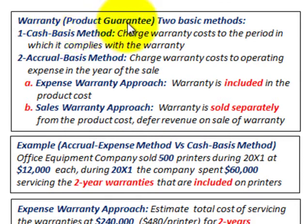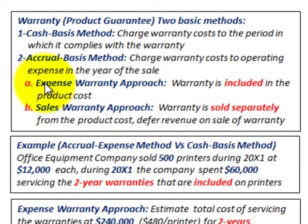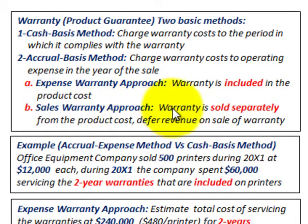We're going to be looking at warranties or product guarantees. We have two basic methods of handling these: the cash basis method, where we charge the warranty cost in the period in which the warranty is complied with, or the accrual basis method, where we charge the warranty cost to operating expense in the year of the sale. Under accrual, we can use the expense warranty approach, where the warranty is included in the product cost, or the sales warranty approach, where the warranty is sold separately.